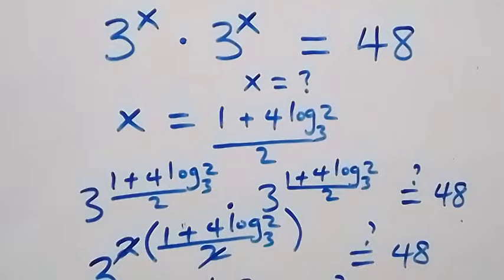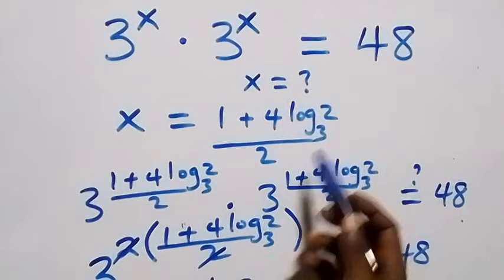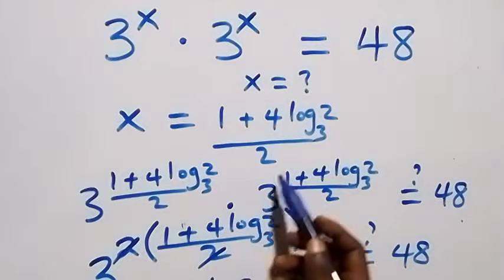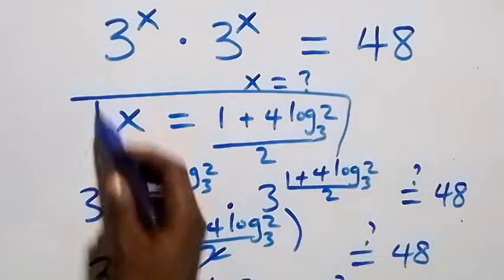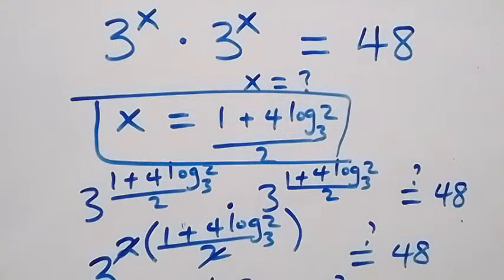Hence we conclude that x equals (1 plus 4 log₃2) over 2 satisfies the given problem. Thank you for watching. Don't forget to subscribe for more videos, turn on the notification bell, share this video, like it, and put your comments. See you in class — bye for now!